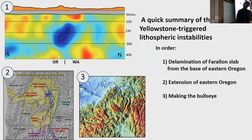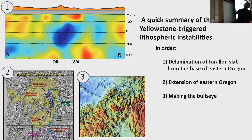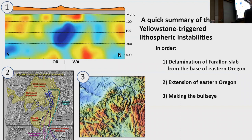A quick summary of where I'm going with the instabilities: first, I think there is some lithosphere beneath the Pacific Northwest — eastern Oregon in particular — that peeled off during this event, triggered by Yellowstone. Second is the extension that occurred in eastern Oregon to accommodate all these dikes. Third, and maybe most of the talk, is the strange bullseye with the Wallowas in the middle.